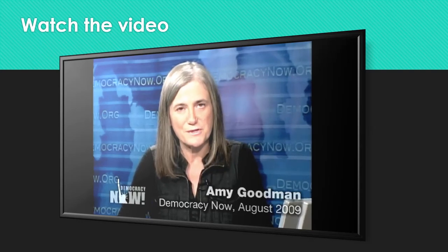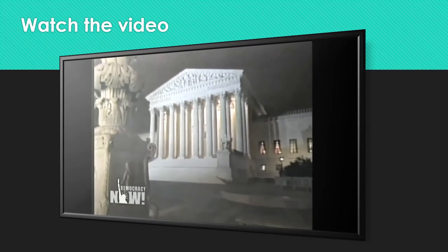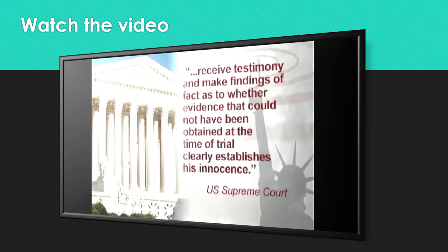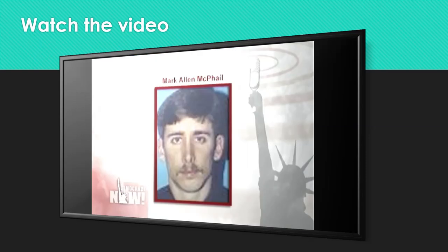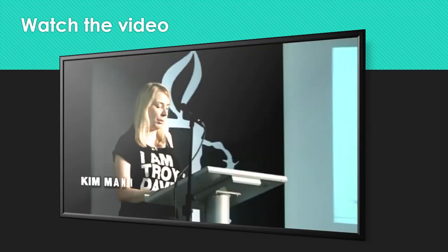The Supreme Court has taken the rare step of ordering a new hearing of Georgia death row prisoner Troy Anthony Davis. The nation's highest court ordered a federal district court in Georgia to receive testimony and make findings of fact as to whether evidence that could not have been obtained at the time of trial clearly establishes his innocence. In 1991, Troy Anthony Davis was convicted for the 1989 killing of an off-duty police officer named Mark McPhail. There is no physical evidence tying Davis to the crime scene, and seven of the nine non-police witnesses have since recanted or altered their initial testimonies. Others have implicated the prosecution's key remaining witness as the actual perpetrator of the crime.